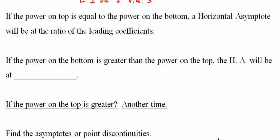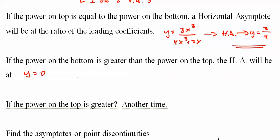Now for your horizontal asymptotes: if the power on top is equal to the power on the bottom, then you look at the coefficients. For example, 3x to the third over 4x to the third plus 2x, you would have a horizontal asymptote at y equals 3 fourths. If the power on the bottom is greater, then you automatically have one at y equals zero.